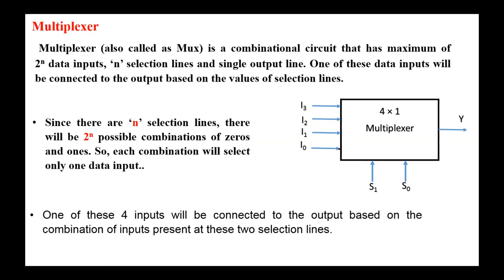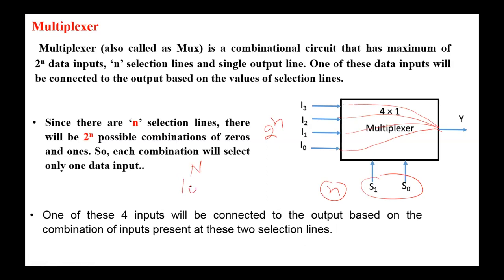In a multiplexer, one of the inputs will be connected to the output. For example, I0 to Y, or I1 to Y, or I2 or I3, depending on the select signals. If we have 2 to the power of n inputs, then the number of select signals is n. Or if the number of inputs is n, then we have log n select lines, provided that the number of inputs is a power of 2.